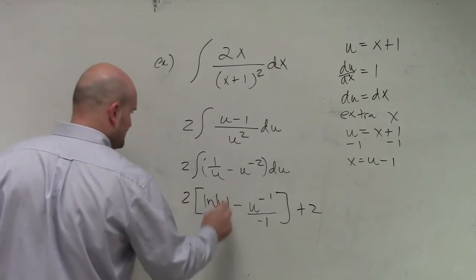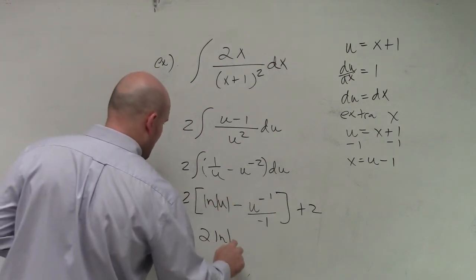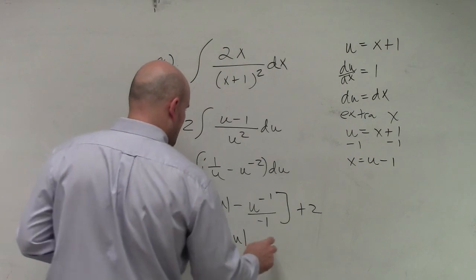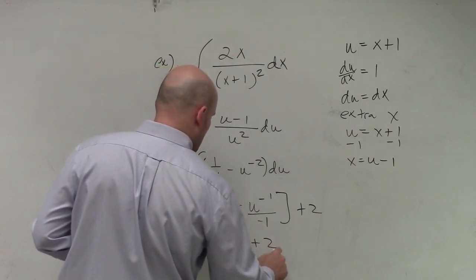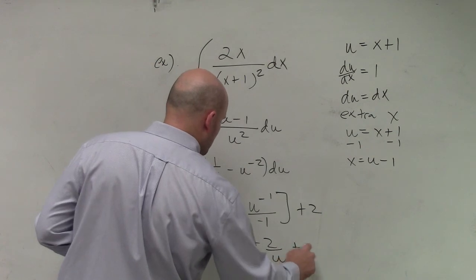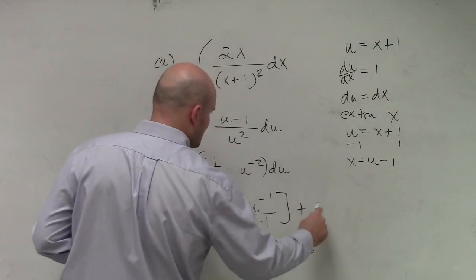So therefore, now I distribute the 2. So I have a 2 ln absolute value of u. And therefore, that's going to be a plus 2 over u plus c. Where did that thing come from?